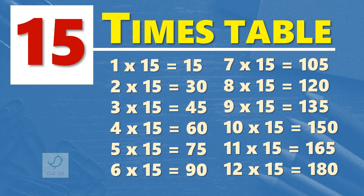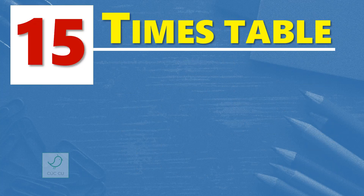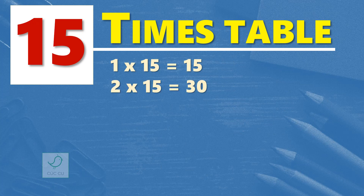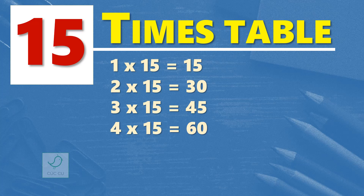One more time. 15 times table. One times 15 is 15. Two times 15 are 30. Three times 15 are 45. Four times 15 are 60.